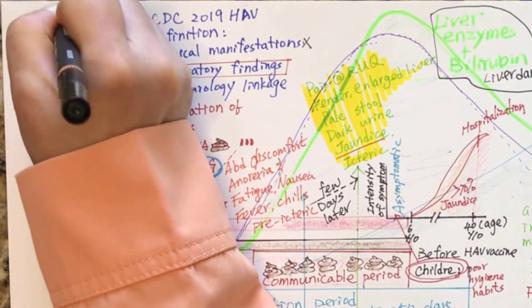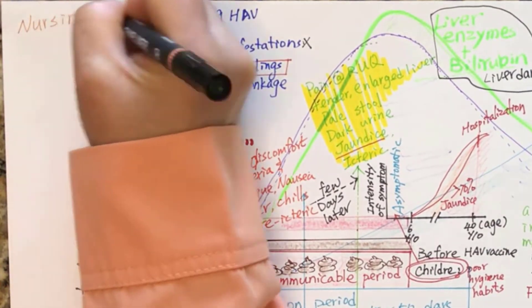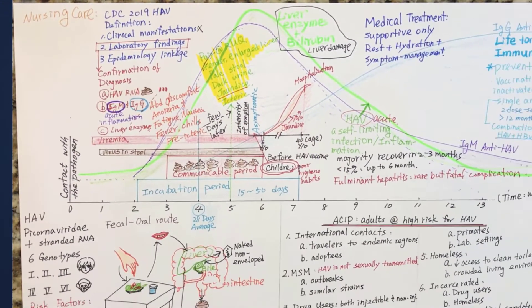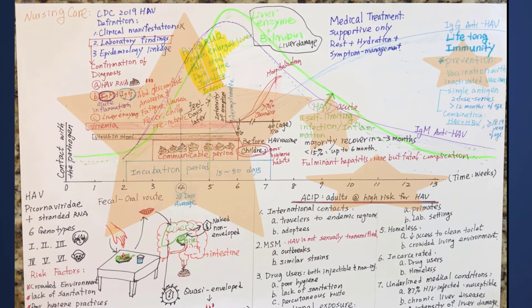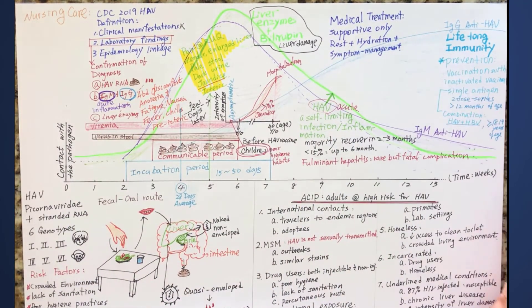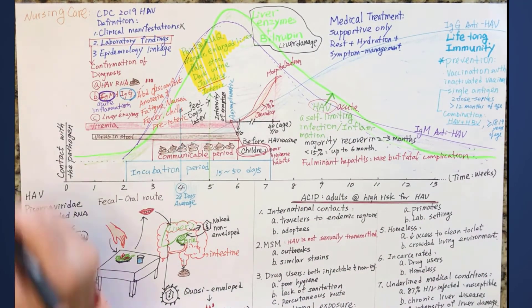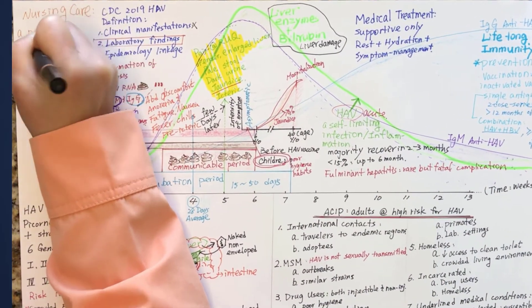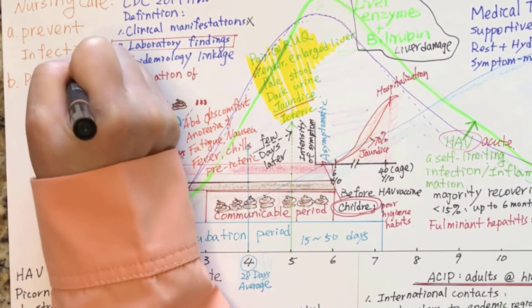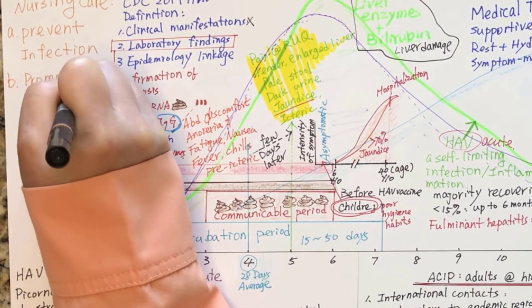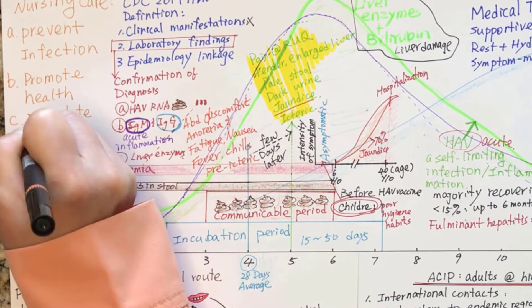Nursing care provided for hepatitis A covers concerns of prevention, people at risk, patient education, and support for recovery. Let's examine what has been discussed and find out what role nurses play and contribute to prevent infection, promote health, and facilitate recovery.